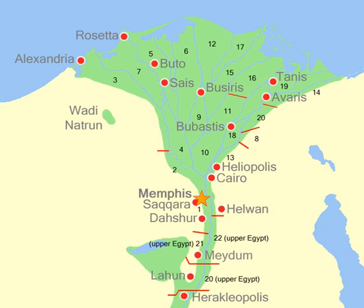The division of ancient Egypt into nomes can be traced back to prehistoric Egypt before 3100 BC. These nomes originally existed as autonomous city-states, but later began to unify. According to ancient tradition, the ruler Menes completed the final unification. Not only did the division into nomes remain in place for more than three millennia, but the areas of the individual nomes and their ordering remained remarkably stable.